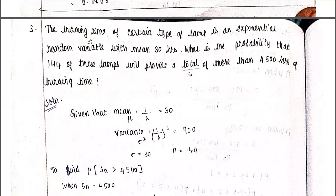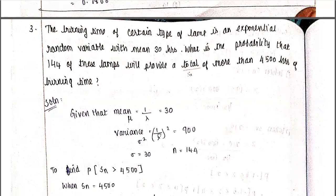The next problem involves the burning time of a lamp, which is an exponential random variable. For an exponential distribution, the mean is 1/λ and the variance is 1/λ². If we know these formulas for each distribution, we can apply the CLT formula to solve the problem.